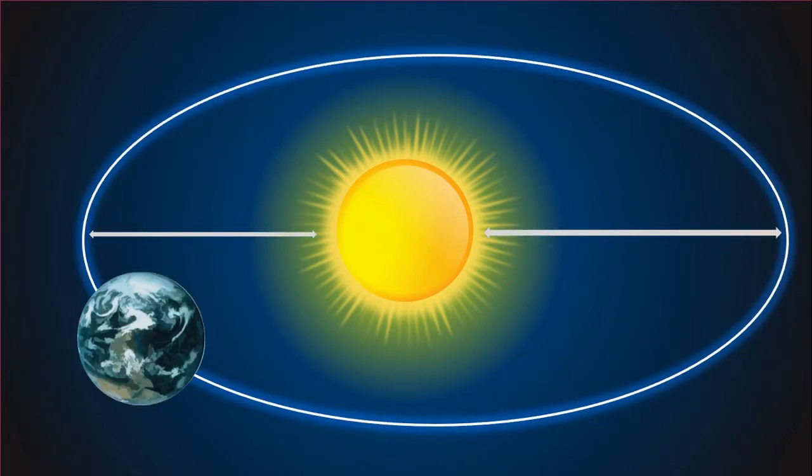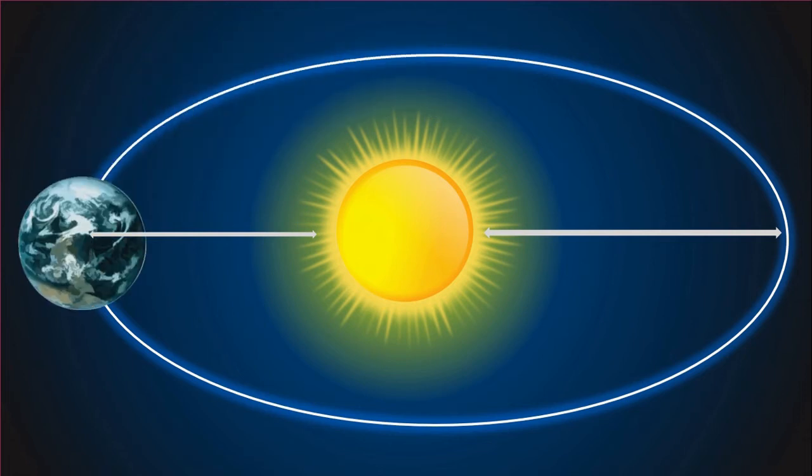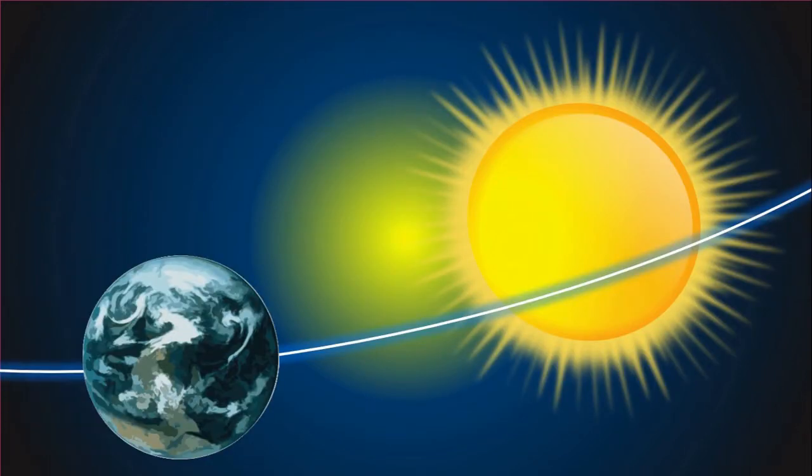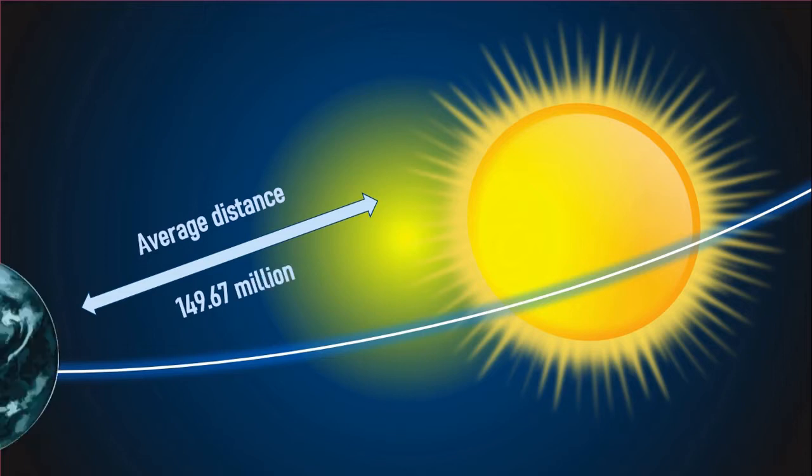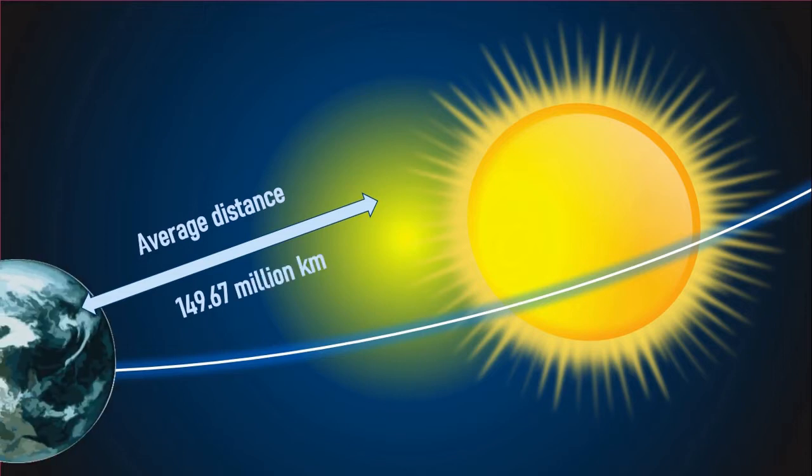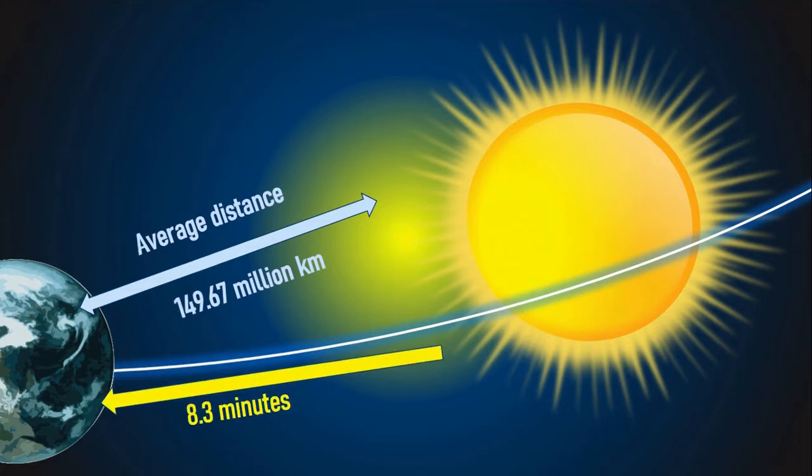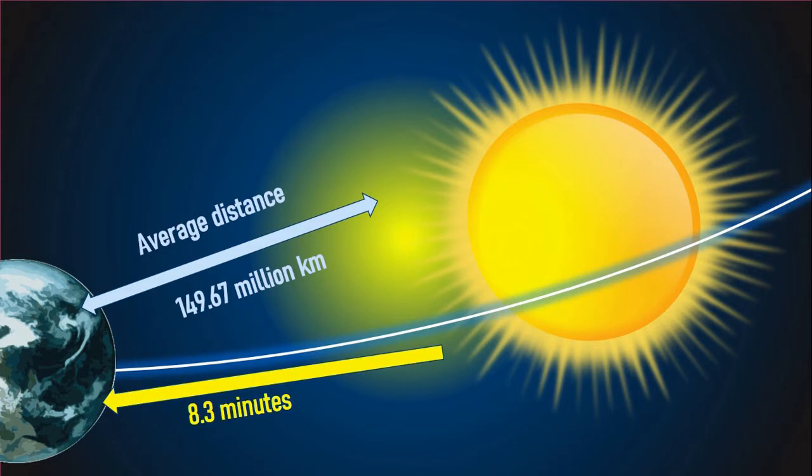The Sun is not in the center of the Earth's elliptical path. The average distance from Earth to the Sun throughout the year is 149.67 million kilometers or 92.96 million miles. Considering speed of light, it takes approximately 8.3 minutes for Sun's rays to reach Earth's atmosphere.